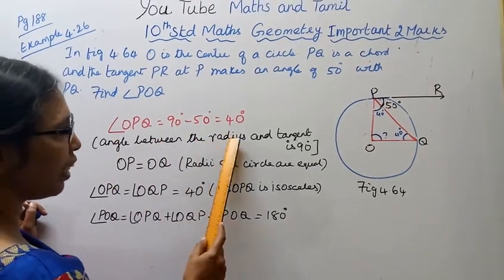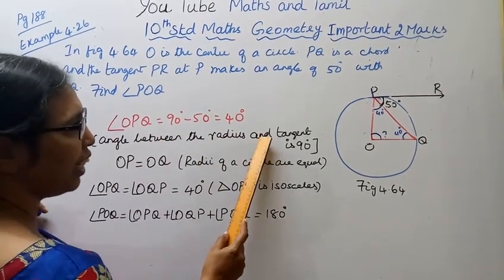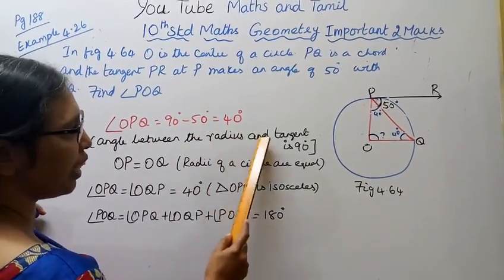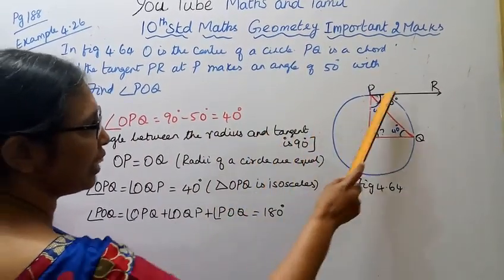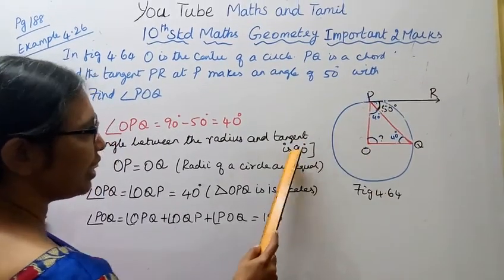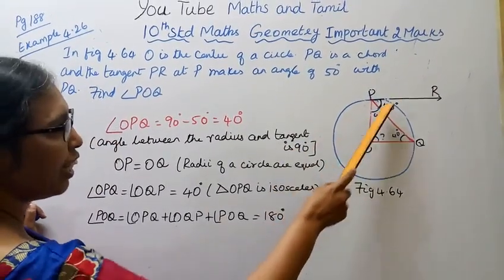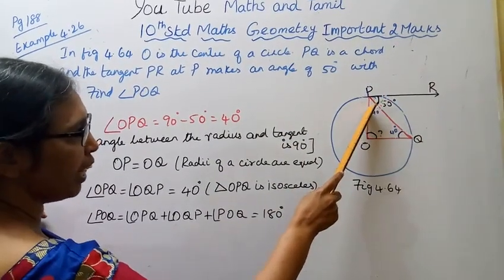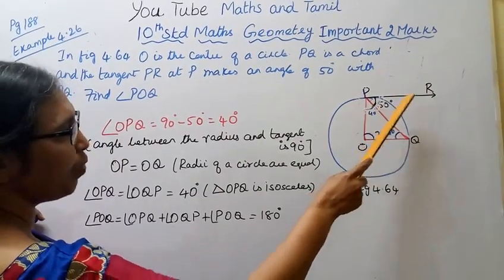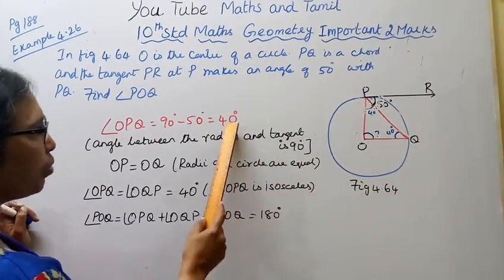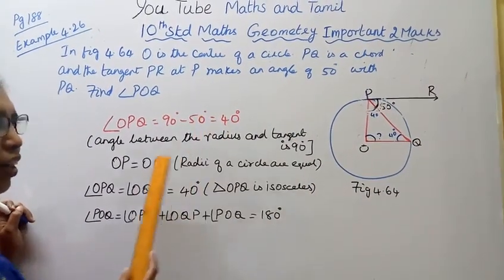The angle between the radius and the tangent is 90 degrees. So angle OPQ equals 90 minus 50, which is 40 degrees.